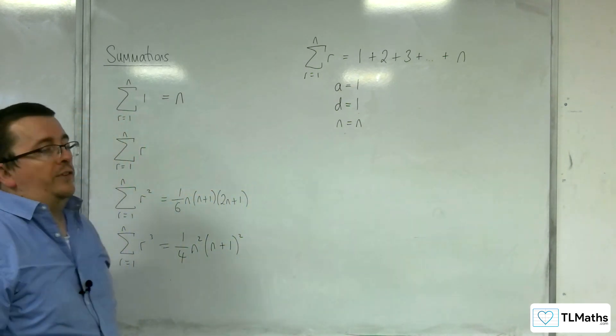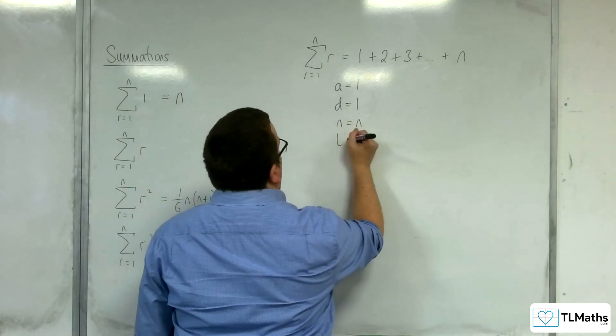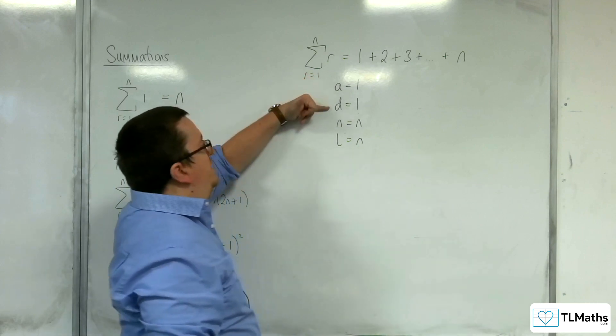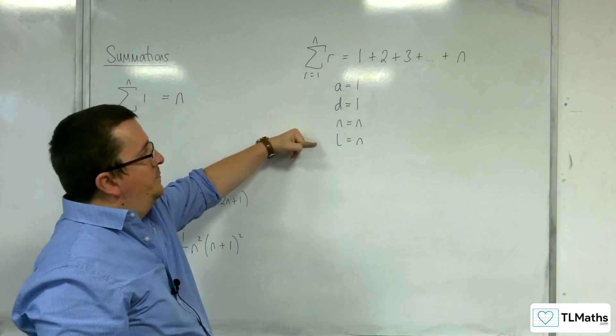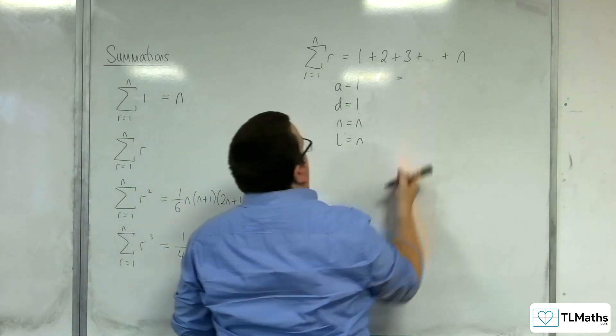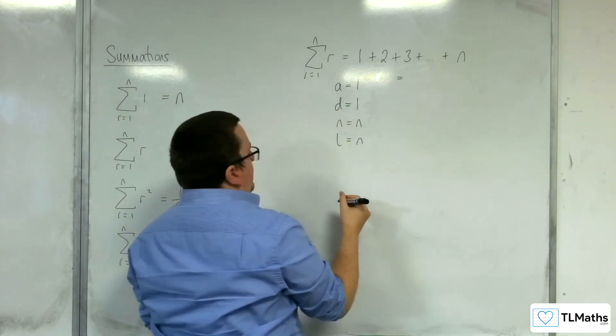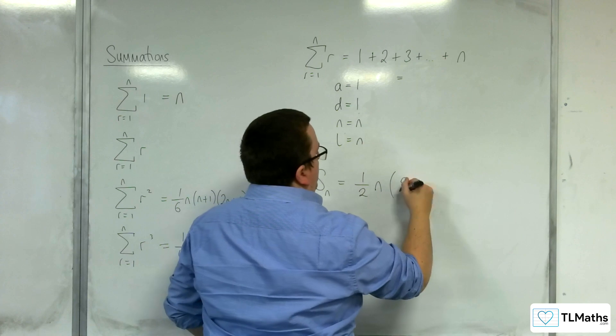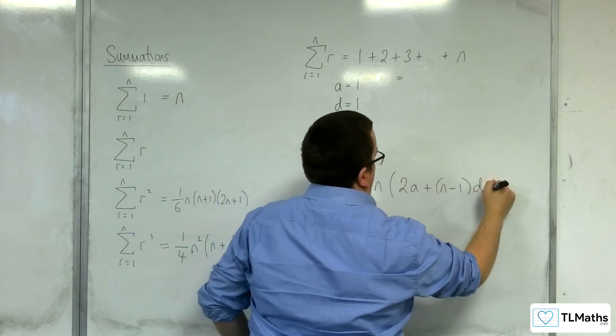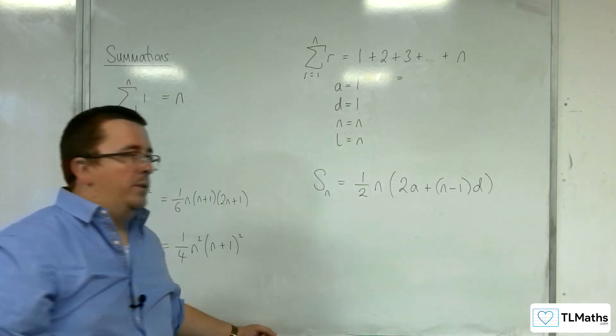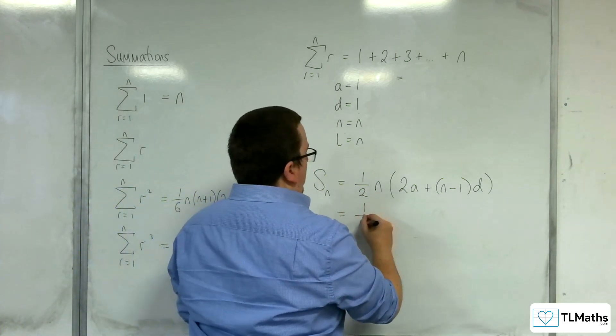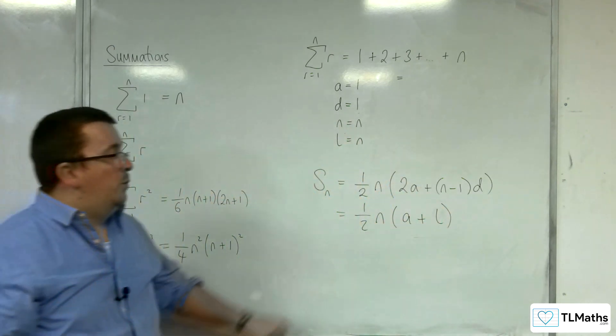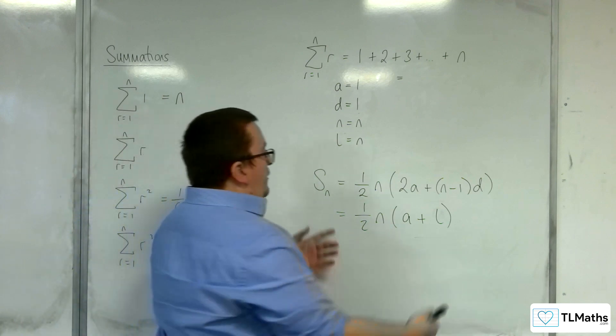You could also use, because there's two formulas for this, the looking at the last term, which is n. So we've got the first term, the common difference, the number of terms, and the last term. So this would be equal to, the two formulas that you use, the sum to n terms, are 1 half n, 2a plus n minus 1d. That's one formula, if you don't know what the last term is. And the other formula is 1 half n, a plus l. That's if you know what the last term is.